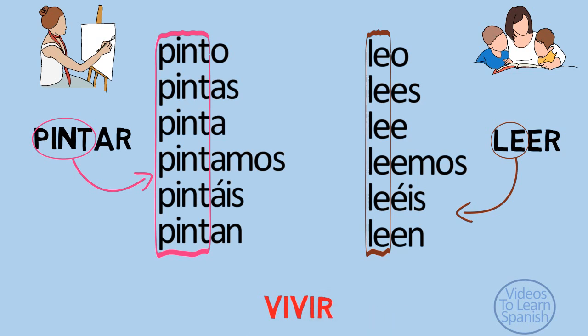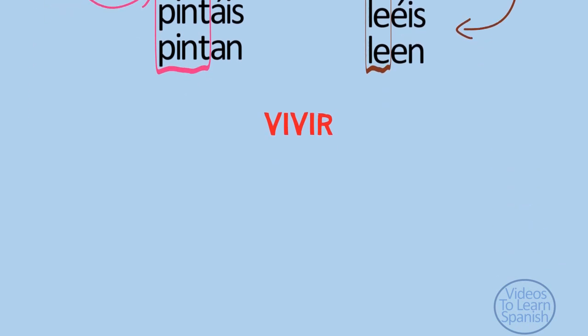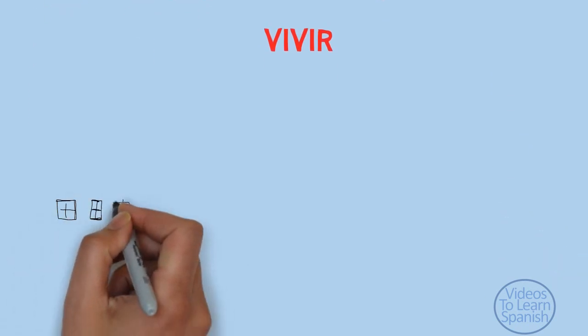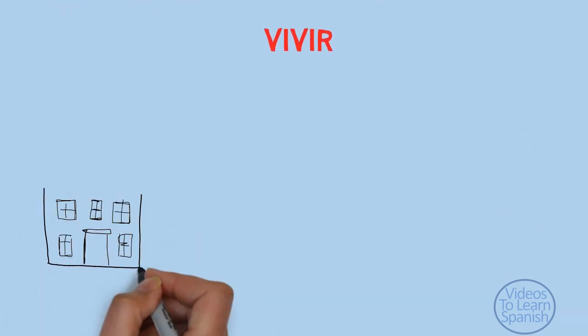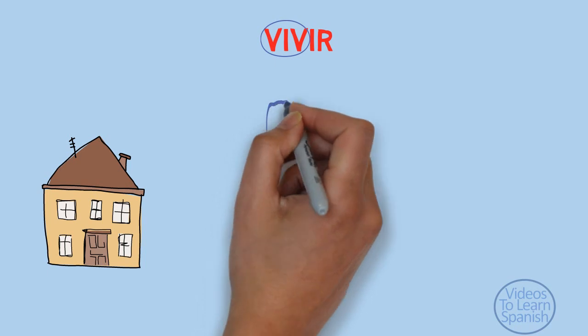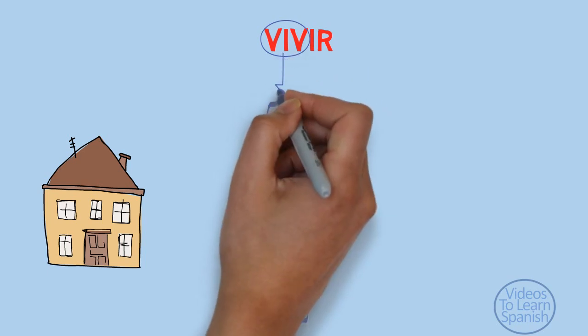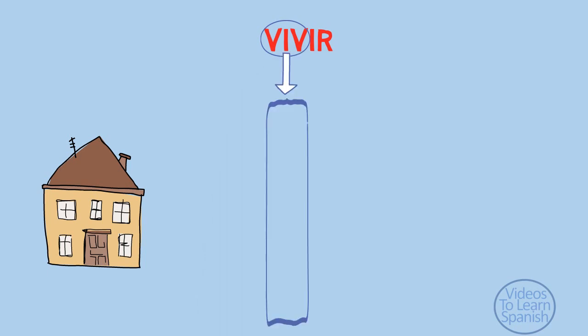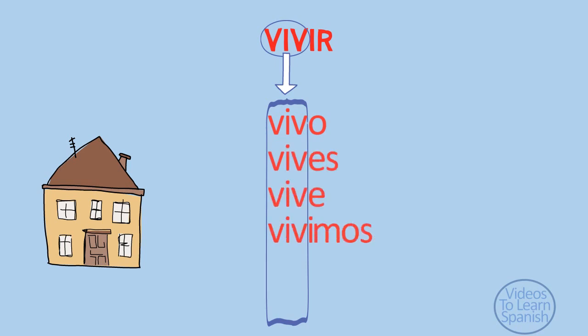Can you now conjugate vivir, to live? Vivo, vives, vive, vivimos, vivís, viven.